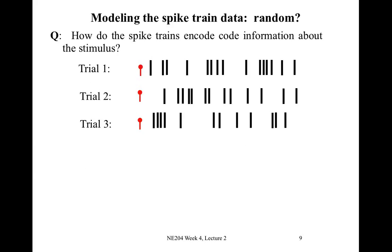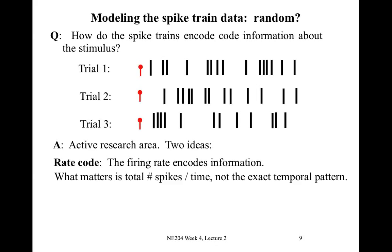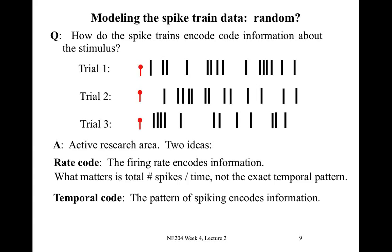Another question is how this spike train encodes information about the stimulus. The neuron is responding following the stimulus — the red symbol at the initial time — and the answer is we don't know; it's an active research area. There are two ideas: one is that the rate encodes the information, meaning the firing rate — how quickly the neuron fires within that 500-millisecond window — is what matters. In this rate code, what matters is the total number of spikes divided by the duration, and the exact temporal pattern of when spikes occur doesn't matter.